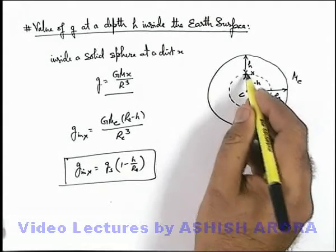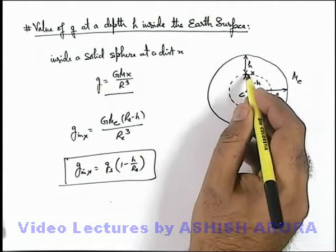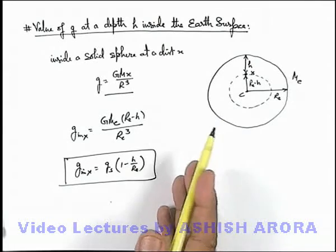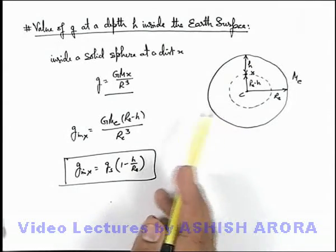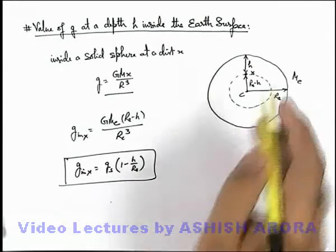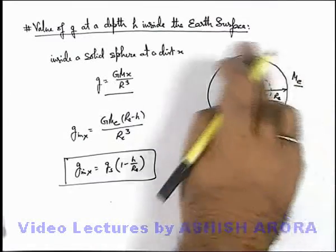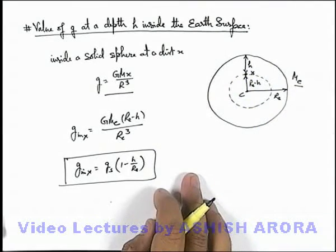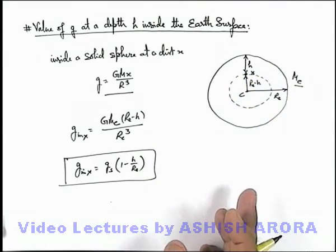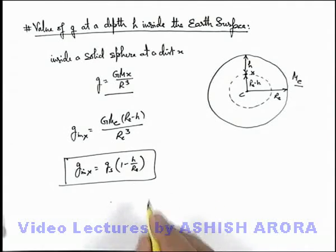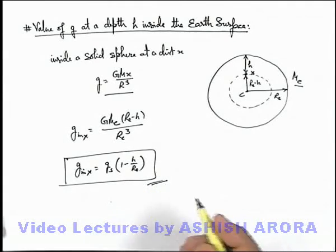The point which is located at a distance Re minus h from the centre of earth. In this calculation we have assumed that the whole mass of earth is uniformly distributed within the volume of earth, whereas actually this is not the case, so actual value differs from this expression to some extent.